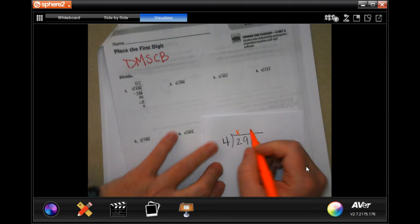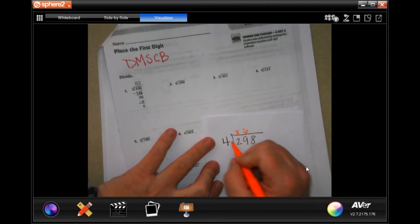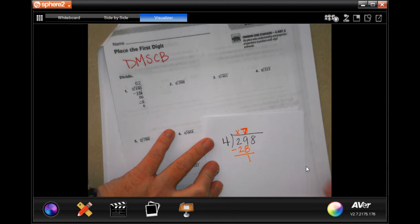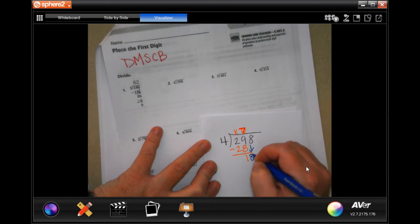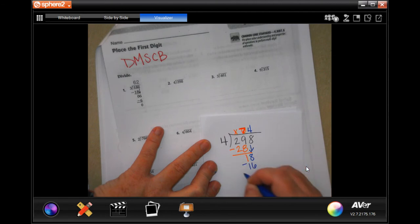Now 4 will go into 29, 7 times. 7 times 4 is 28, leaving me 1. 1 is smaller than 4, so I'm checking. I'm going to bring down that. 4 will go into 18, 4 times. 4 times 4 is 16, leave me remainder 2.